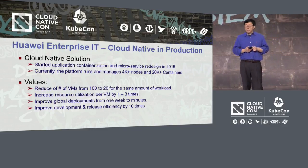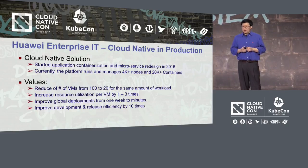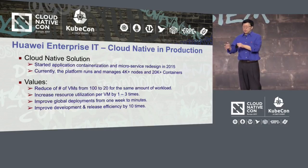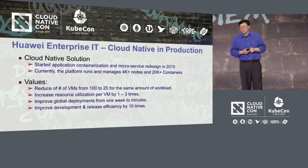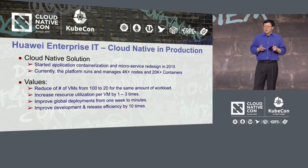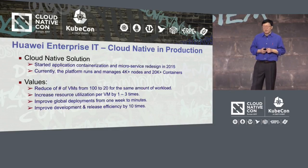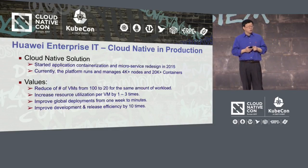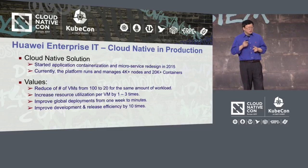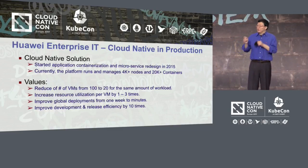This cloud native platform helps them to run more apps with the same amount of resources. In some scenarios, they were able to reduce the number of VMs from 100 to 20 for the same workload. Additionally, they improved global deployment time from one week down to minutes. This is real value that cloud native can bring to the enterprise.